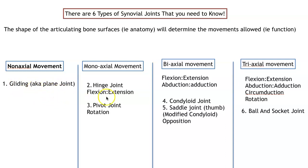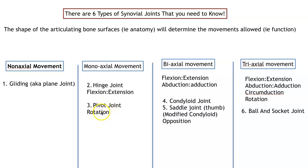Then we go to our hinge joints, the second synovial joint. Hinge joints allow movement in one axis — mono-axial movement — and will only allow flexion and extension. Our third synovial joint is a pivot joint, and it is also mono-axial, only allowing rotational movement. We're going to be looking at all of these individually.